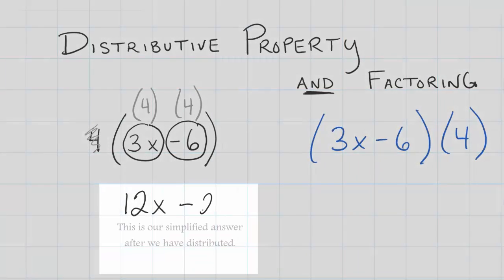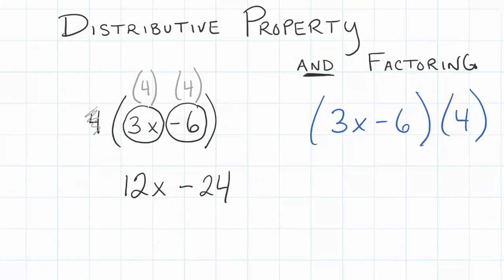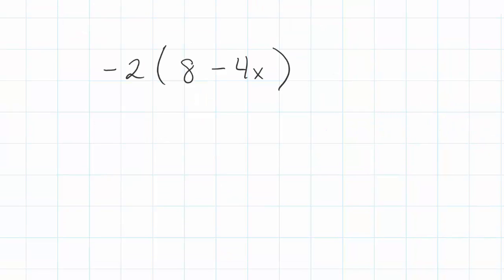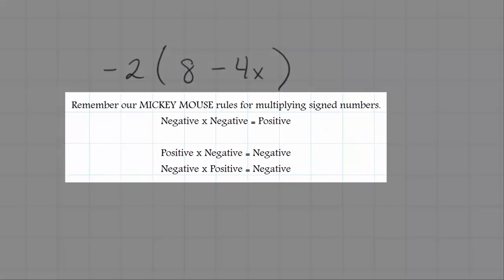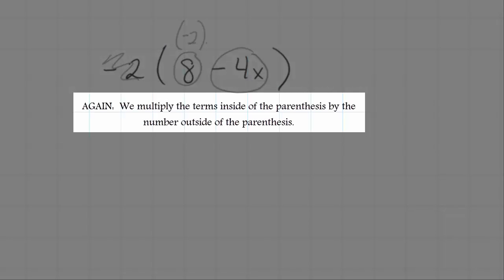Let me show you another distributive property question. What happens if we're going to distribute a negative to the terms inside of the parentheses? Well, we just have to follow our integer rules for multiplication. I'm going to circle my terms inside the parentheses. I have a positive 8 and I have a negative 4x, and I'm going to multiply both of these by negative 2.